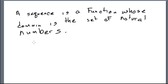A natural number is just a positive integer — it's 1, 2, 3, 4, etc. But I'm going to include 0 as well.